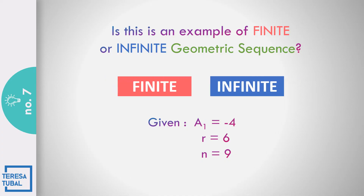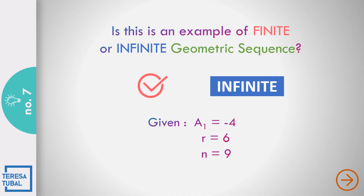Question number 7: Is this finite or infinite? The first term is negative 4, the common ratio is 6, and the number of terms is 9. The answer is finite. We have the first term, and we have the number of terms equal to 9, which means you can solve for and find the last term.